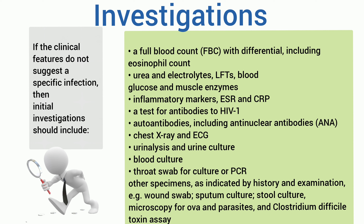Investigations: if clinical features do not suggest a specific infection, initial investigations should include a full blood count with differential including eosinophil count, urea and electrolytes, LFTs, blood glucose and muscle enzymes, inflammatory markers (ESR, CRP), a test for antibodies to HIV-1, autoantibodies including anti-nuclear antibodies, chest X-ray, ECG, urine analysis, urine culture, blood culture, and throat swab for culture or PCR. Other specimens as indicated by history and examination.